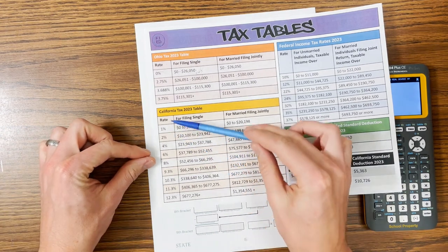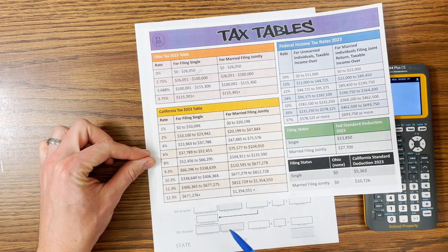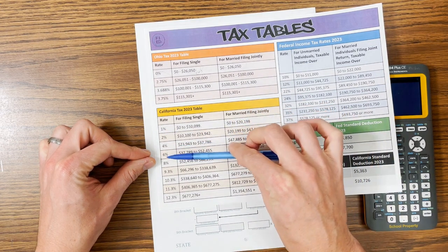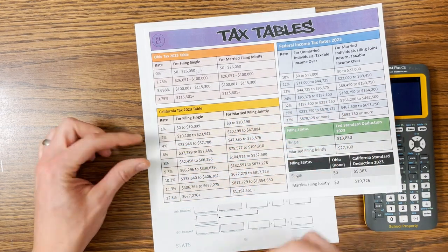But just so you can see, California has a progressive tax system like we do at the federal level. So we've got one, two, three, four, five, six, seven, eight, nine brackets.